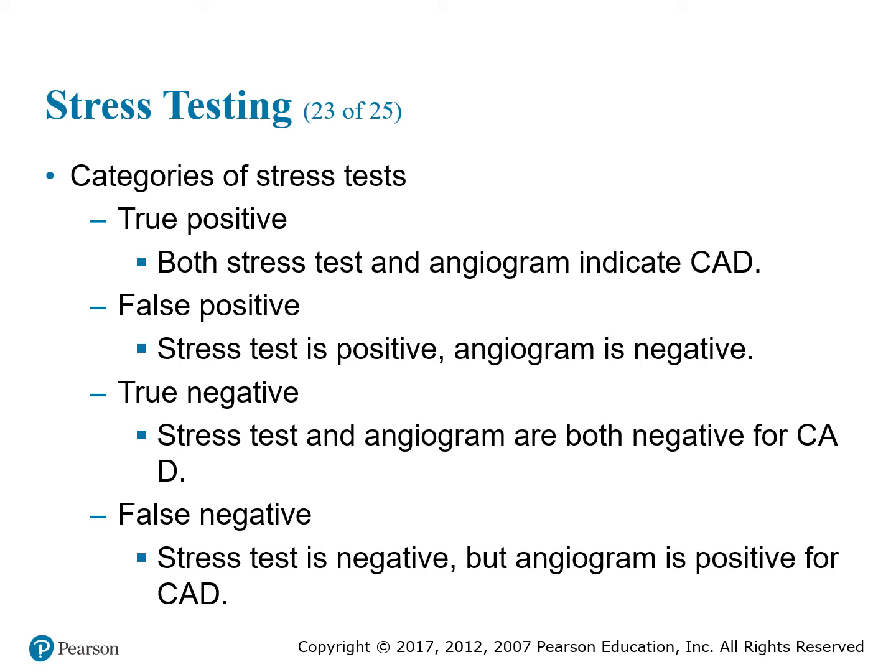Stress test results fall into four categories. A true positive means the stress test is positive for CAD and the angiogram also confirms CAD. A false positive means the stress test is positive for CAD but the angiogram is negative, resulting in normal coronary arteries. A true negative means both the stress test and angiogram are negative for CAD. A false negative means the stress test is negative but the angiogram confirms CAD.